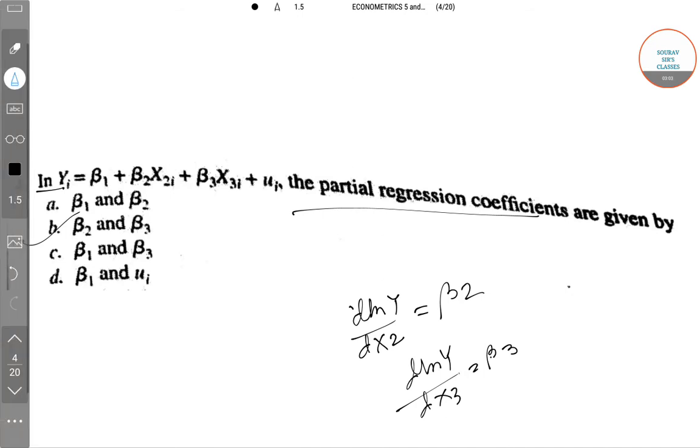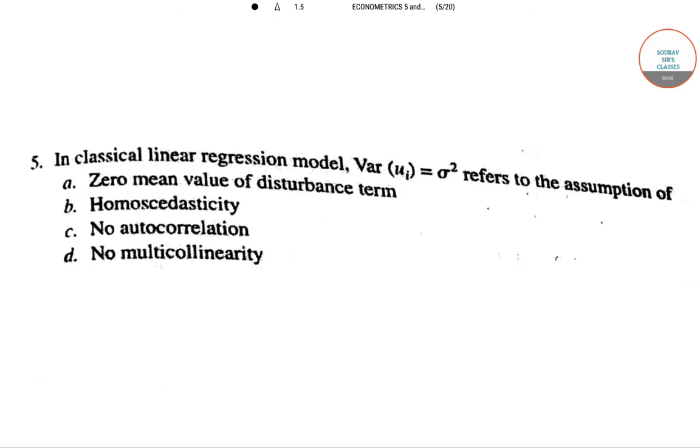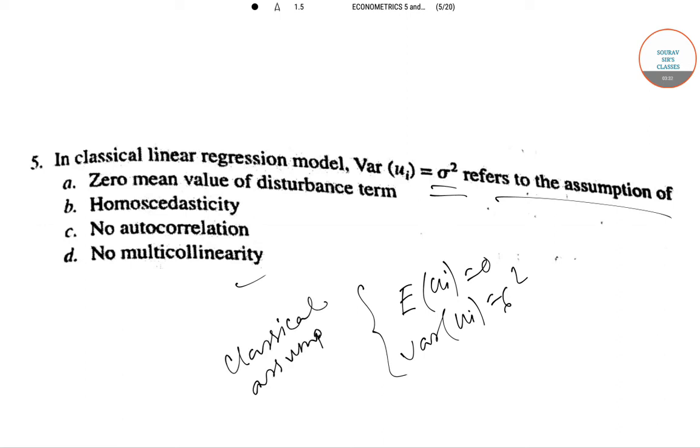Moving to the fifth question we have in a classical linear regression model if the variance ui is sigma squared that refers to the assumption of zero mean value disturbance term, homoscedasticity, no autocorrelation, or no multicollinearity. So zero mean assumption is expectation of ui equals zero and variance of ui is sigma squared. Both of these are the classical assumptions which must be satisfied in the case of any regression model.